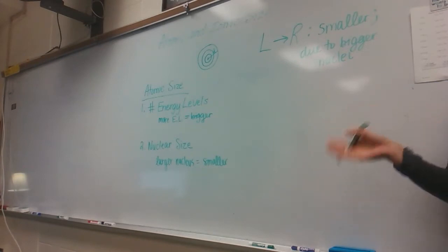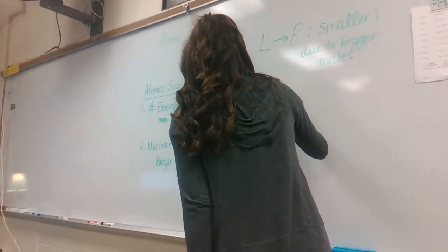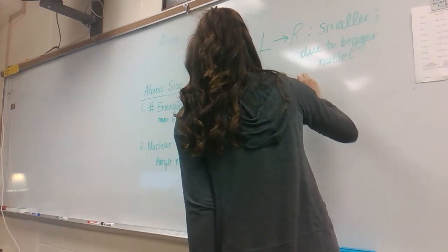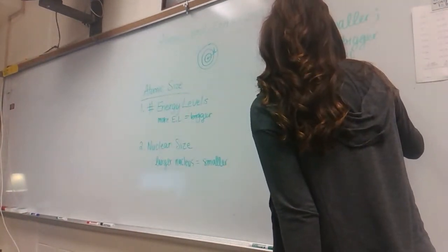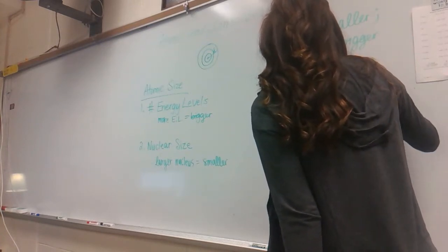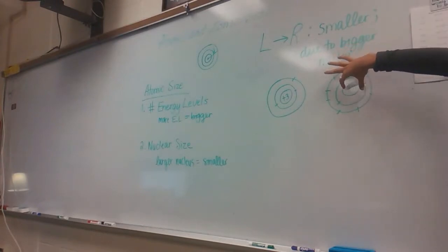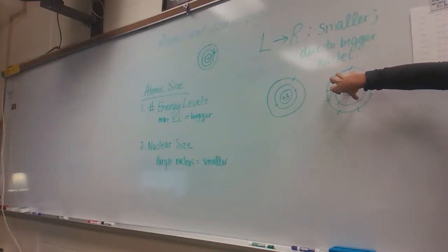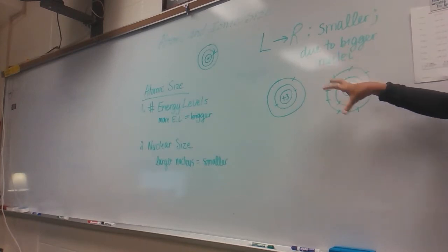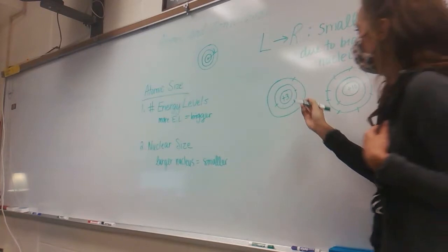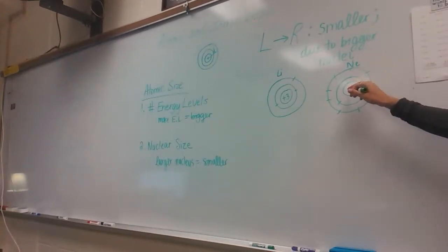For example, comparing lithium (plus 3, two energy levels) and neon (plus 10, two energy levels) — that big positive-10 nucleus pulls harder on those outer electrons, so neon is slightly smaller than lithium. It's not a huge difference, but neon is smaller than lithium because of its bigger nucleus pulling harder on the electrons.